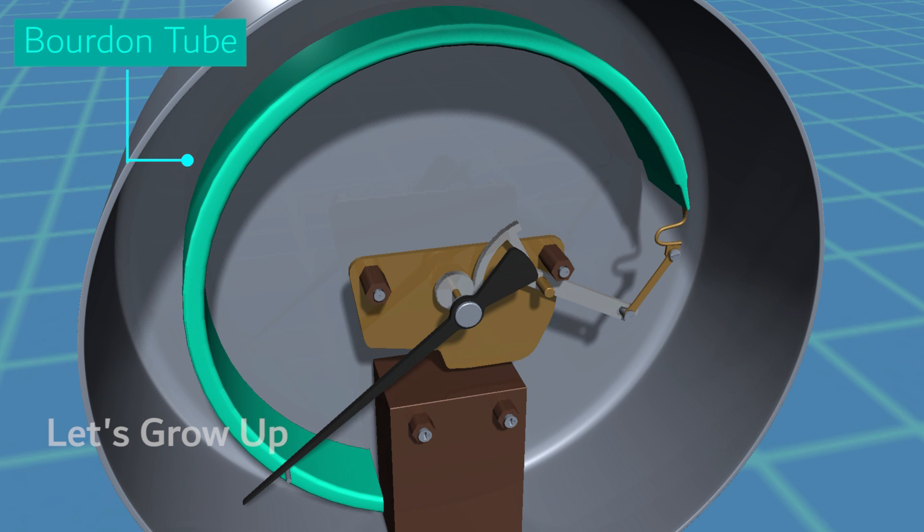This is an oval or C-shaped Borden tube. It's a crucial component of many pressure gauges, and it operates based on the principle of air pressure.